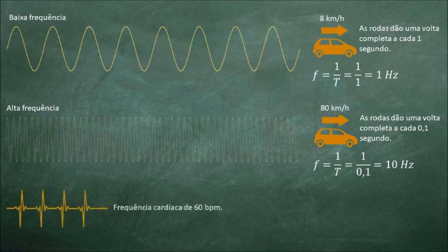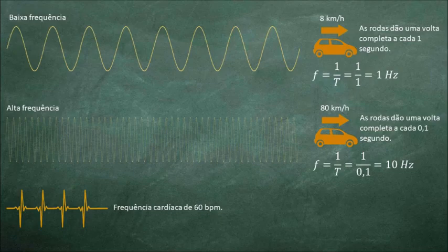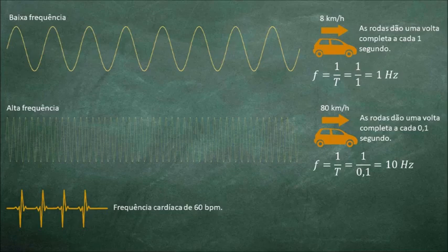Um outro exemplo prático de frequência é dado pelos batimentos cardíacos. Quando dizemos que uma pessoa tem uma frequência cardíaca de 60 batimentos por minuto, estamos associando isso ao conceito de frequência física. A grande questão aqui é associar a massa à frequência. Isso a física quântica pode fazer.